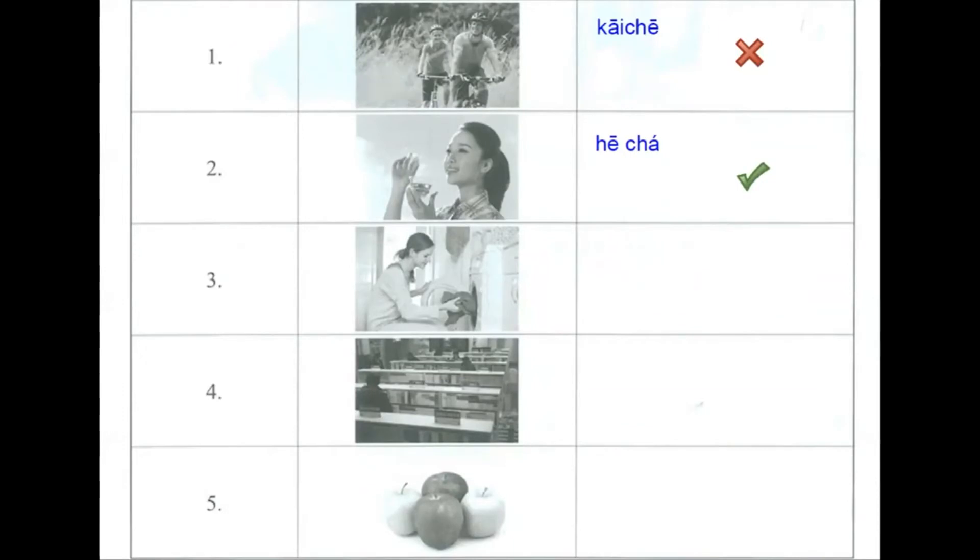Number three. 买衣服. We have a woman using a washing machine, and we hear 买衣服, to buy clothes, and this is incorrect.